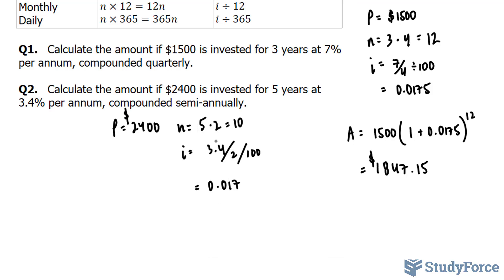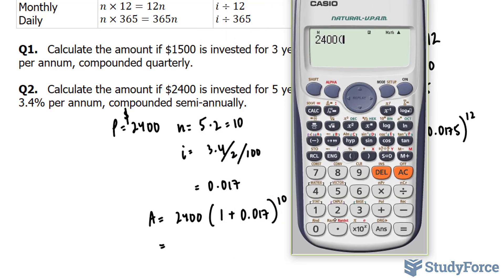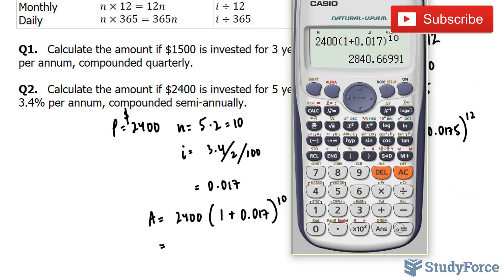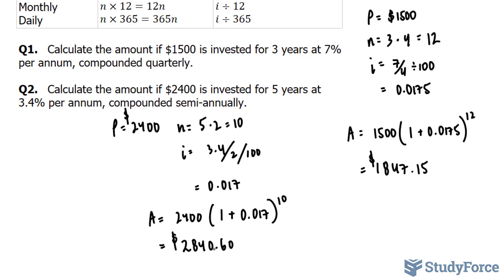Plugging these values into the formula: A is equal to 2,400 multiplied by 1 plus 0.017 to the power of 10. Using our calculator, this gives us 2,840.60. So after 5 years, this person has approximately $2,840 in their bank, meaning they earned approximately $440 in interest.